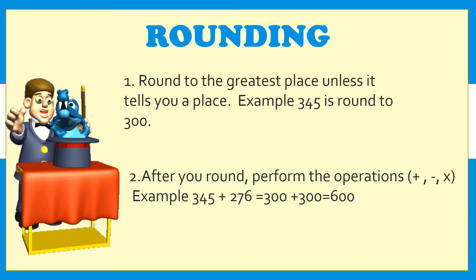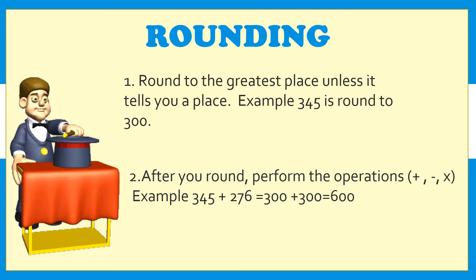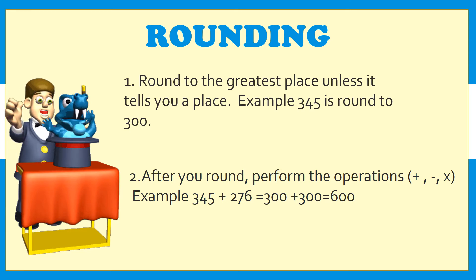Example: 345 is rounded to 300. In the number 345, the greatest place is hundreds. I will look at the tens place to help me estimate. The digit is less than 5, so the hundreds place remains and the rest of the digits become zeros. After you have rounded, perform the operation — plus, subtract, or multiply. So 345 rounded to 300, and 276 rounded to 300, giving a total of 600.